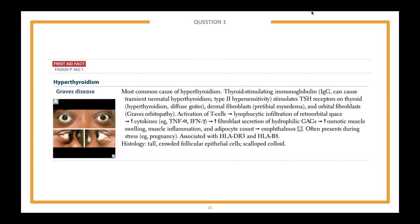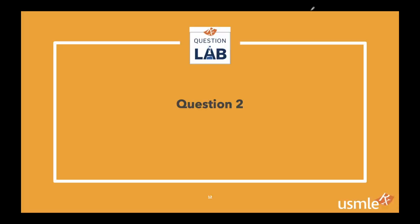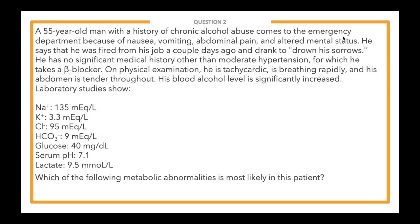Onto our second question. The answer choices are covered up, and we'll begin with the lead-in: Which of the following metabolic abnormalities is most likely in this patient? An example of a one-step question is asking for a diagnosis; a two-step question asks for a treatment; a three-step question asks for the mechanism of a treatment for a diagnosis. Let us know how many steps this requires and what the keywords are.